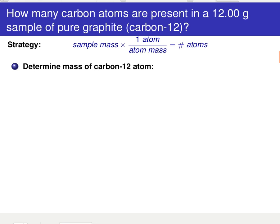All right, and this is a problem that we're all familiar with from previous sections. So the general strategy here, we've got a mass of the sample of our graphite sample, and we need to determine a conversion factor that takes us to the number of atoms from the mass of that individual atom.